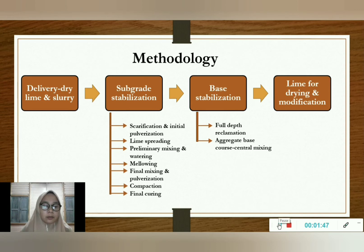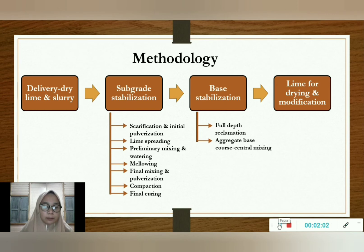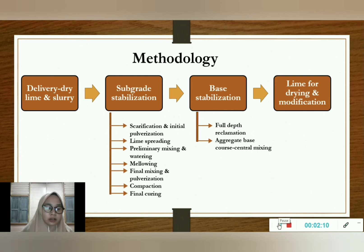Third, preliminary mixing and watering: this step requires spreading the lime through the soil and mixing it with water to initiate the chemical reaction for stabilization. The fourth step is the mellowing period. In this step, the chemical reaction in the lime-soil mixture changes the material. The mellowing period typically lasts 1 to 7 days.